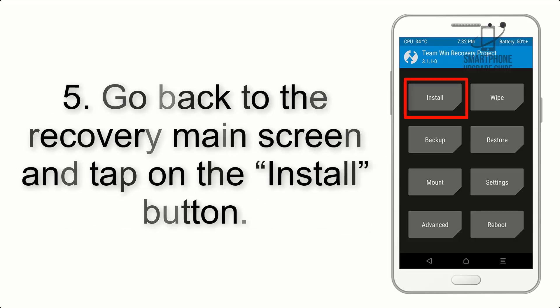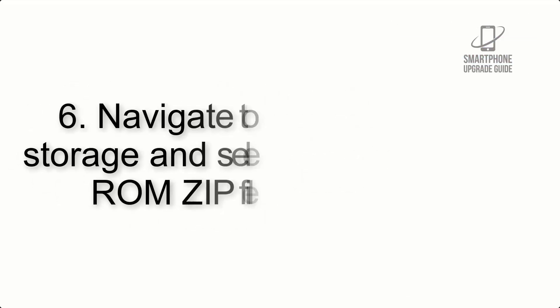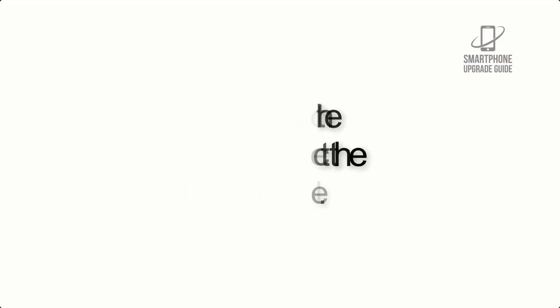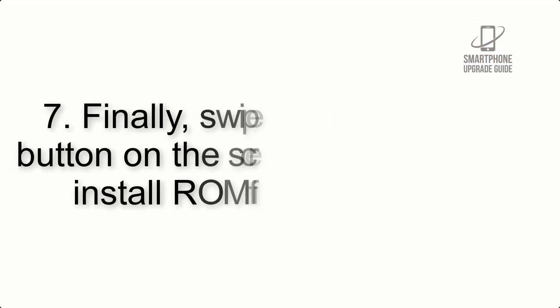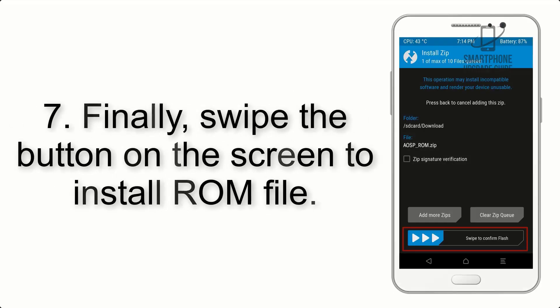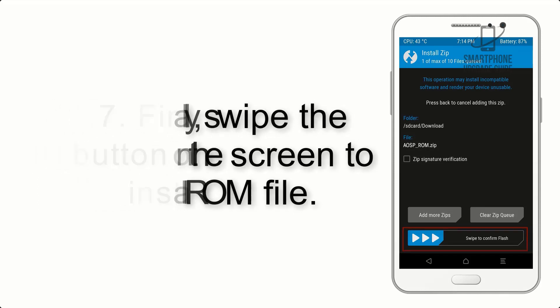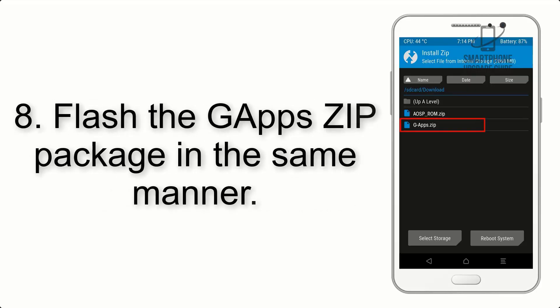Step 5: Go back to the recovery main screen and tap on the Install button. Step 6: Navigate to the storage and select the ROM zip file. Step 7: Finally, swipe the button on the screen to install the ROM file.